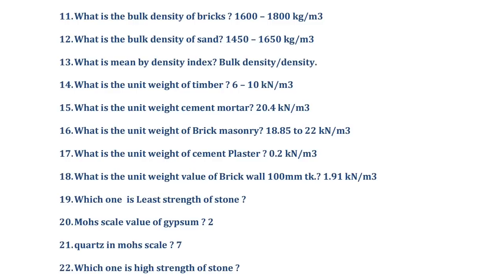What is the density index? Density index (ρ₀) is the ratio of bulk density to density. It is denoted by the symbol rho naught, and its value is always less than 1. What is the unit weight of timber? The unit weight of timber is 6 to 10 kilo Newton per meter cube.